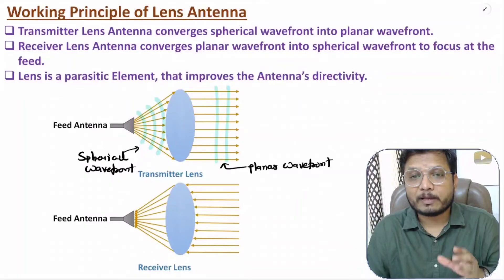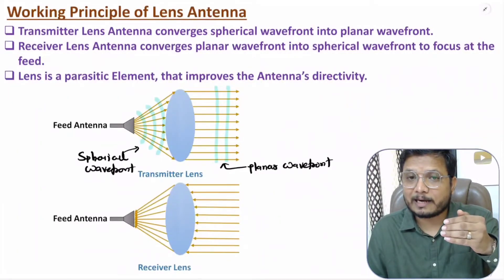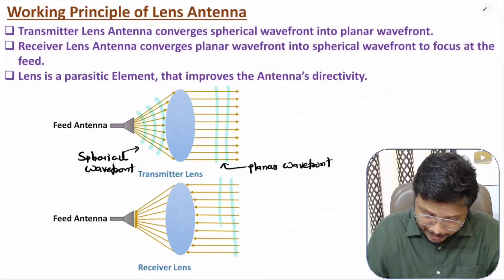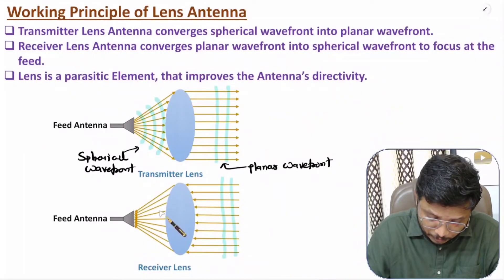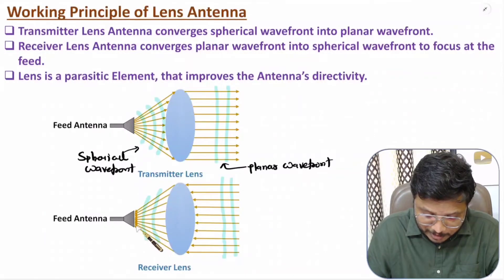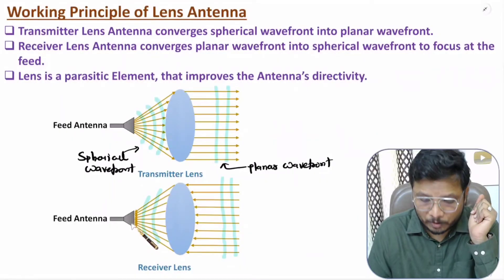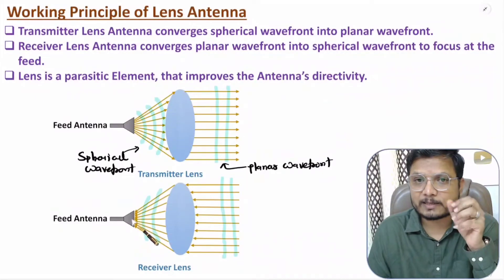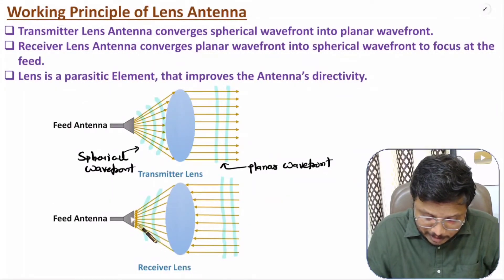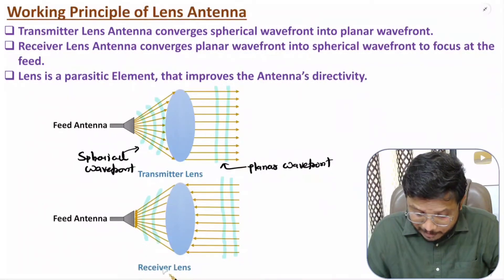When used as a receiver antenna, whatever EM waves come to the lens antenna are planar in wavefront. This planar wavefront is converted into spherical wavefront by the lens, and those waves are converged and focused at the feed. When using lens antenna as a receiver, you don't need a higher aperture area for the feed, because all the waves are converging at the focal point.